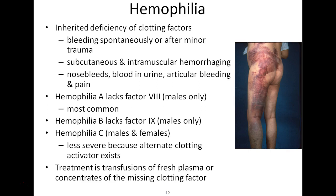Let's discuss a homeostatic imbalance of the cardiovascular system: hemophilia. Hemophilia is a group of bleeding disorders caused by specific genetic mutations that cause certain clotting factors to function improperly. The two most common types are hemophilia A and hemophilia B, both inherited from an X-linked recessive genetic system. Females are typically the carriers, but it's typically males who have the condition because they only have one X chromosome and their Y chromosome lacks the ability to mask the trait.